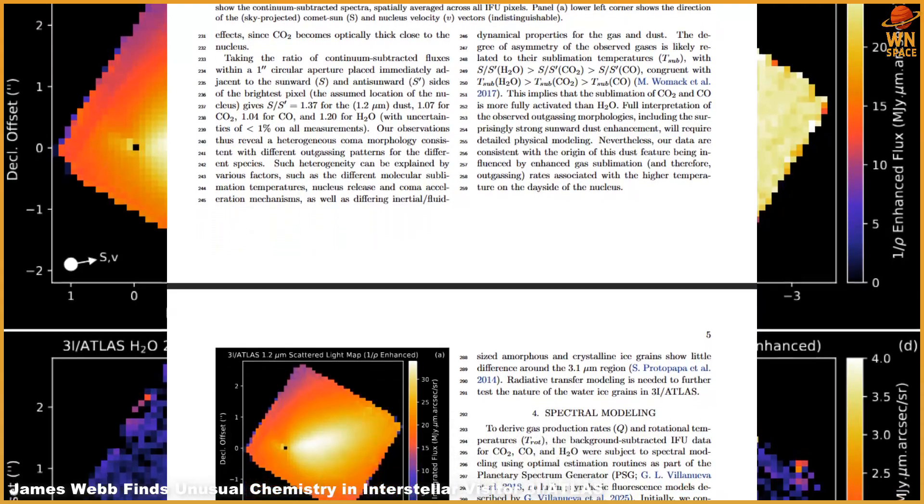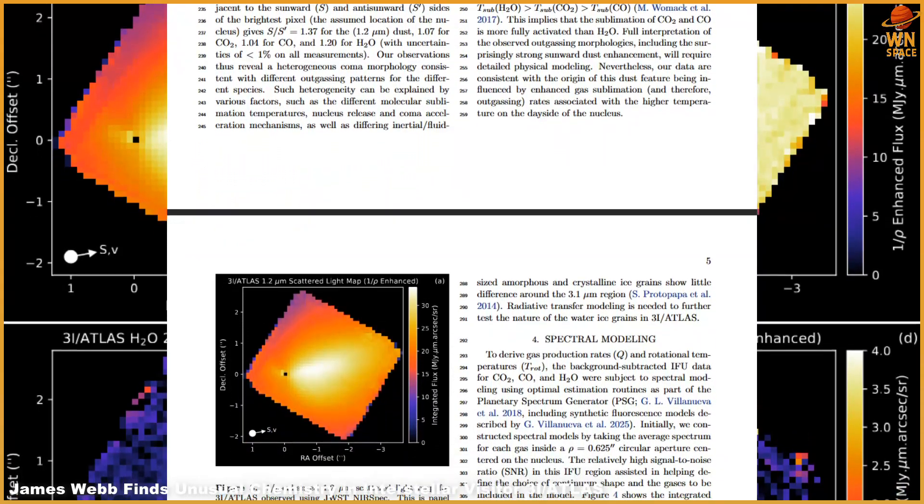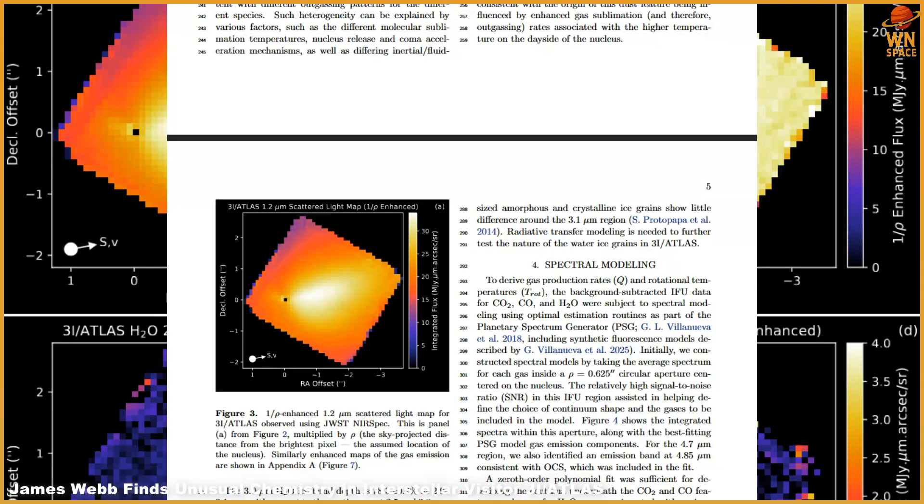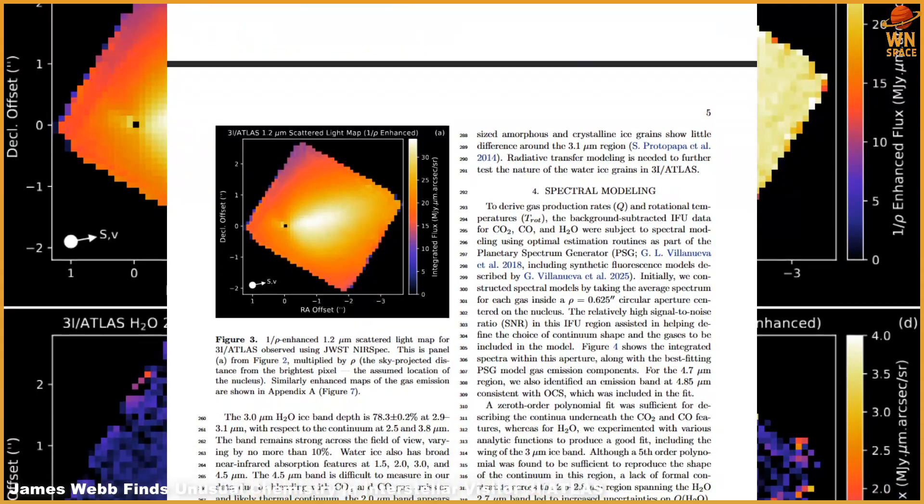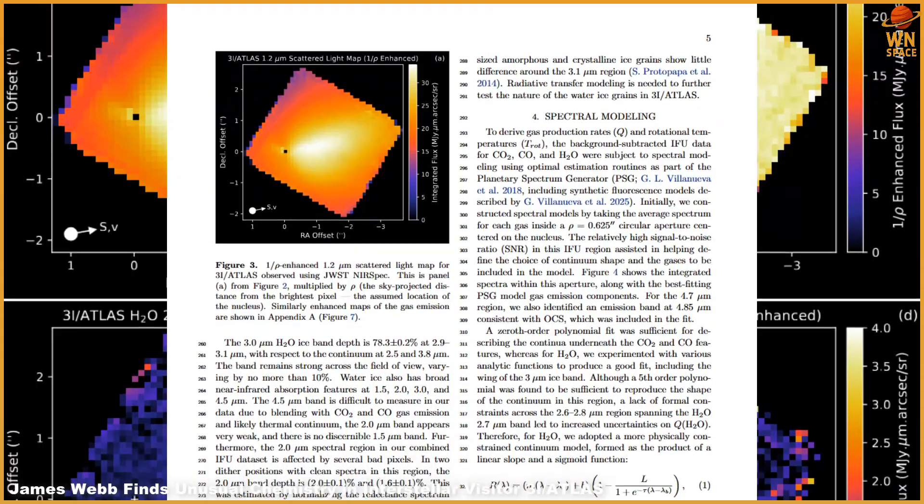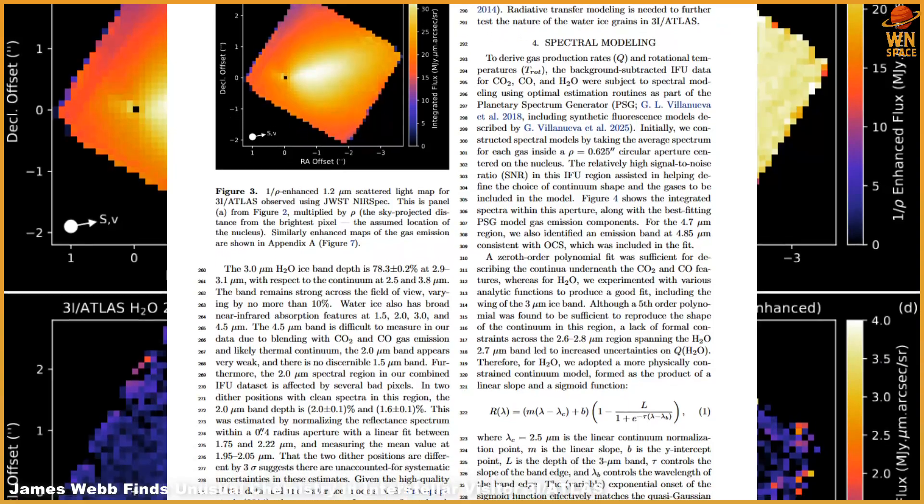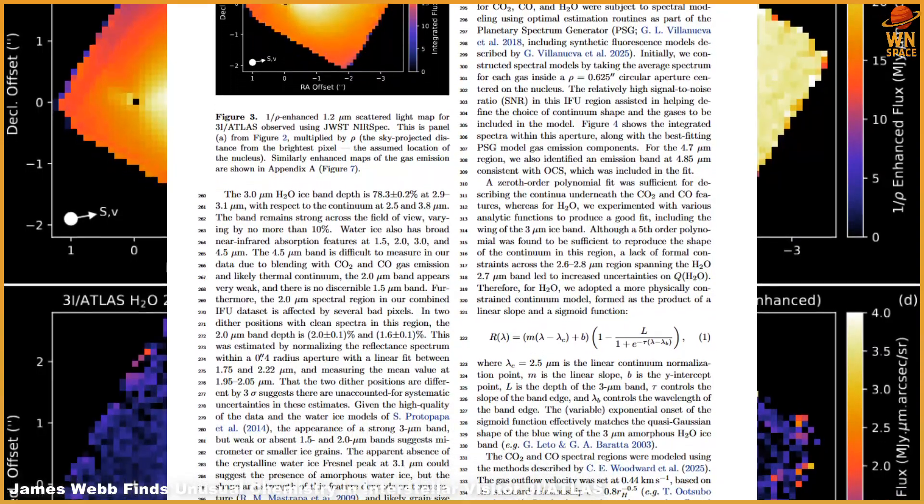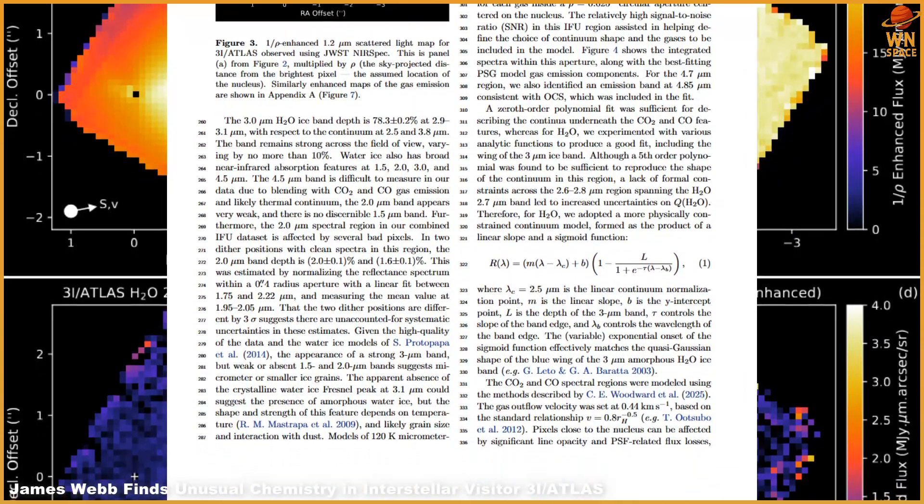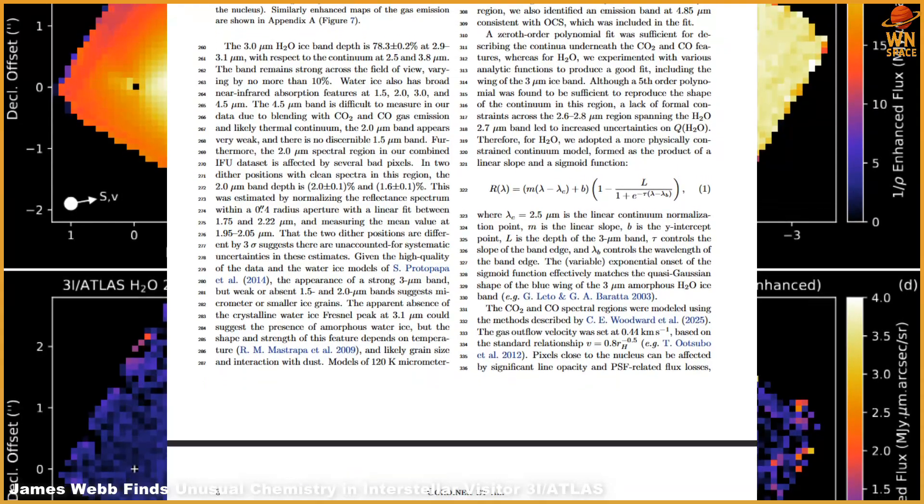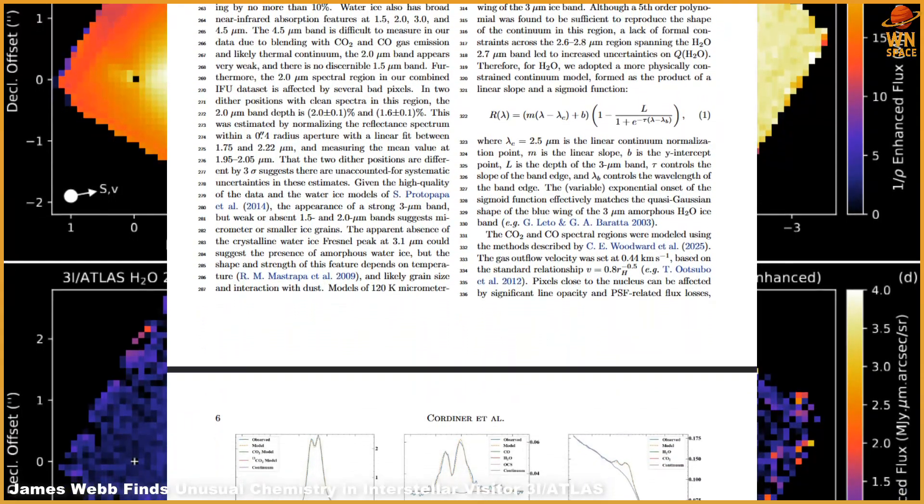Together, Hubble, Webb, SPHERE-X, SWIFT, and a network of ground-based telescopes have built an unprecedented multi-wavelength profile of this interstellar wanderer. For scientists, 3I Atlas is a Rosetta Stone, offering a chance to directly compare the building blocks of another planetary system with the icy leftovers of our own.